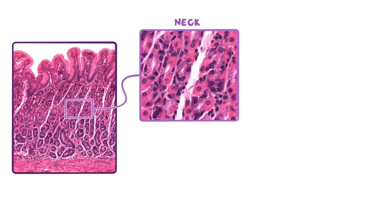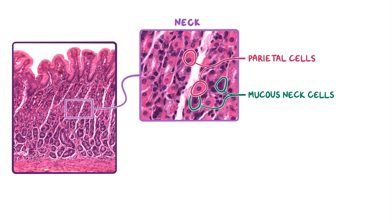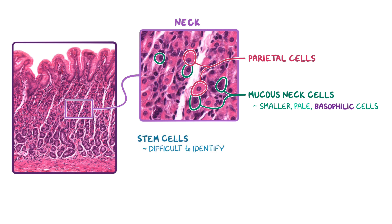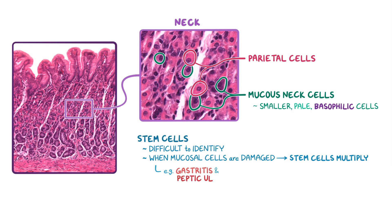The neck of the gastric glands consists mostly of parietal cells and mucus neck cells. The mucus neck cells can be found in between the parietal cells as smaller, pale, basophilic cells that are also seen in the base region. The neck also contains stem cells, which are difficult to identify using only an H&E stain. However, when mucosal cells are damaged — as in gastritis and peptic ulcers — the stem cells multiply to replace damaged cells, making them easier to identify histologically.